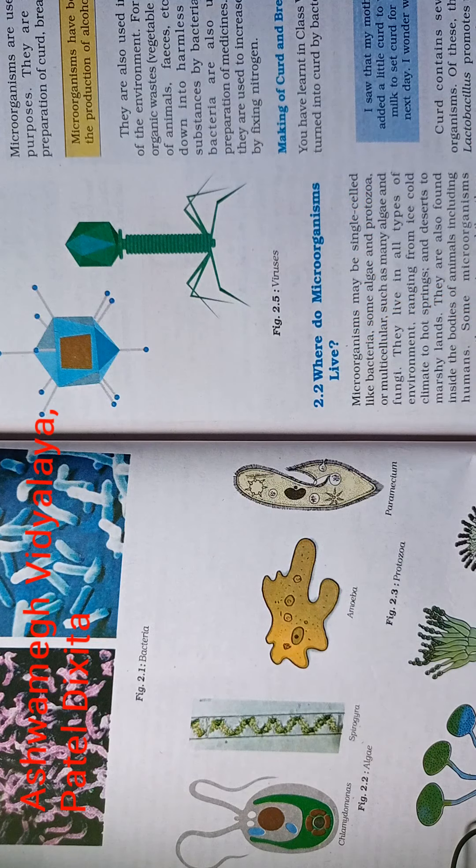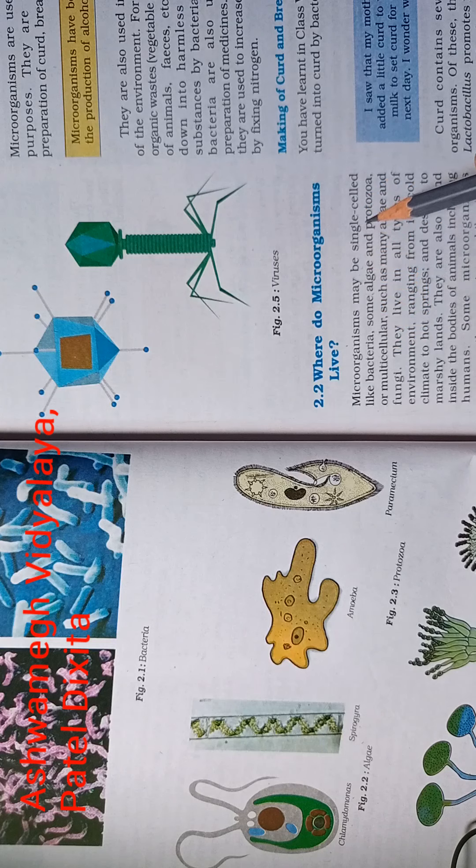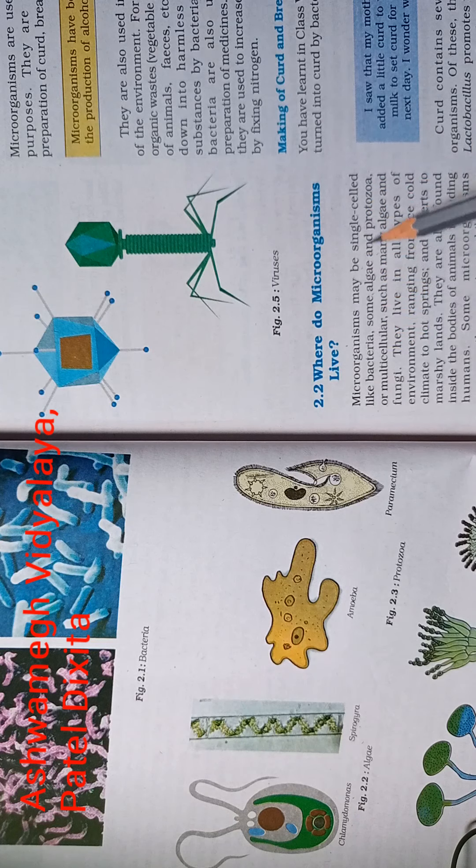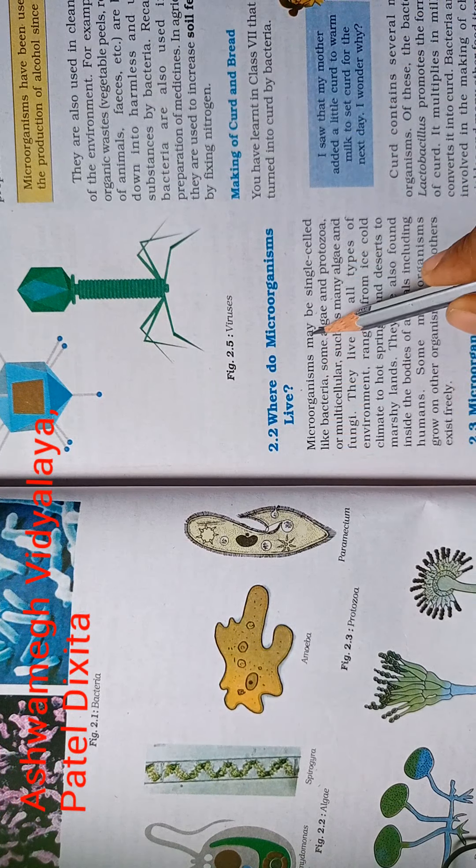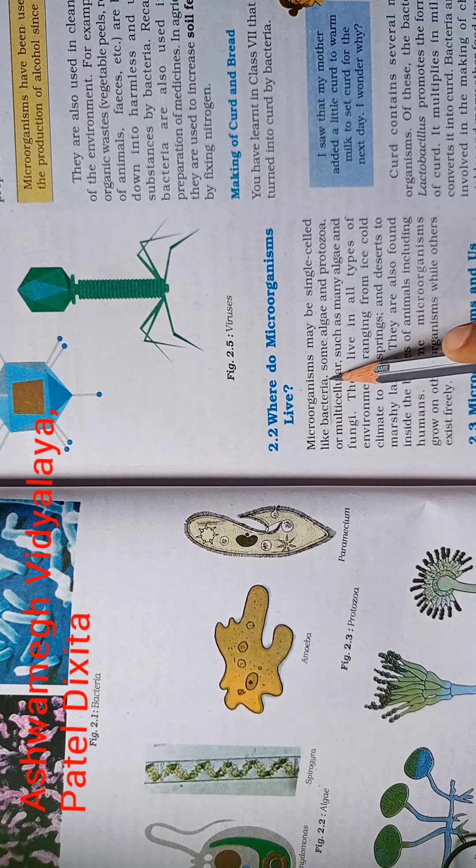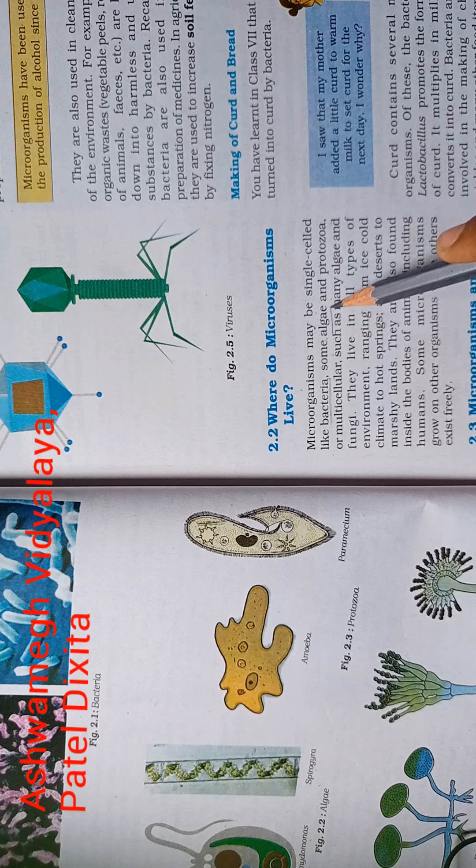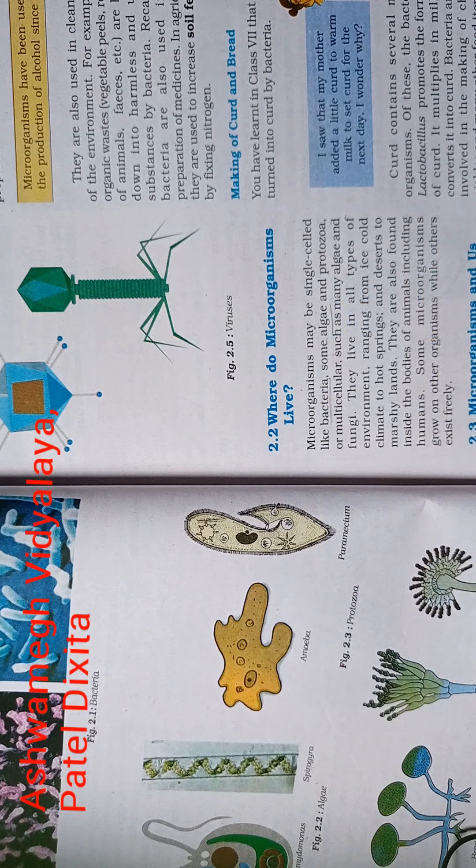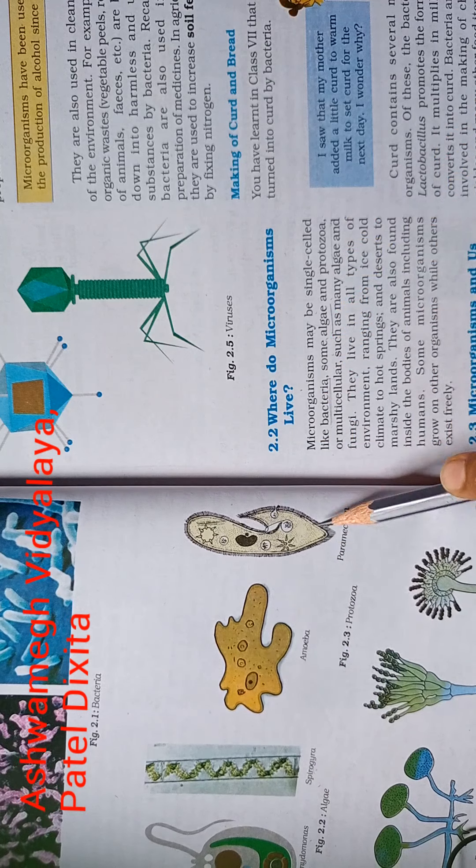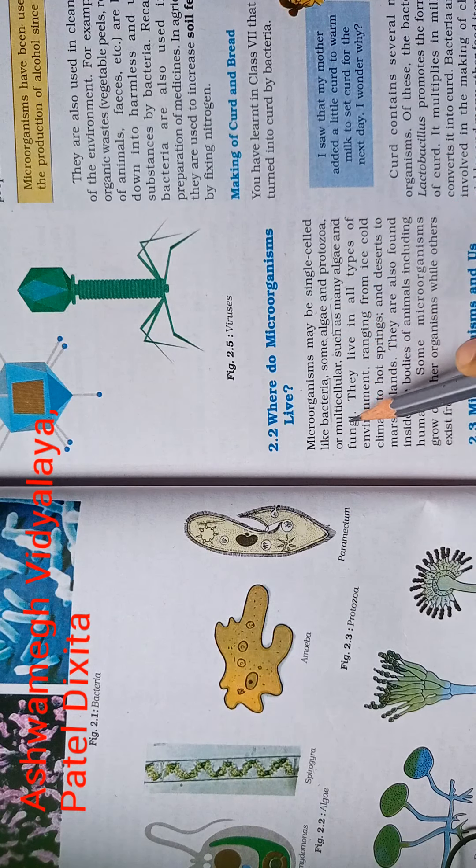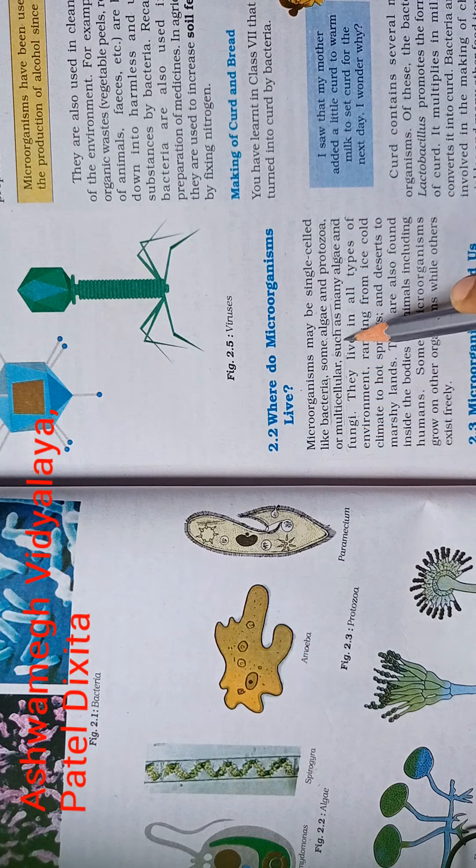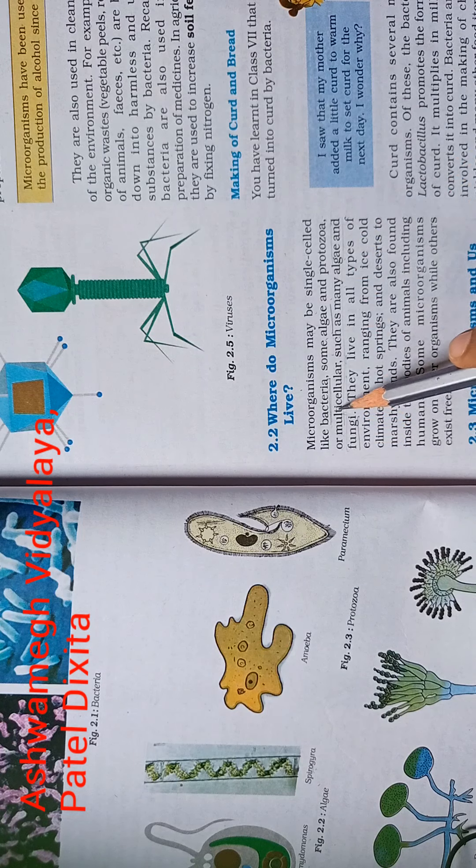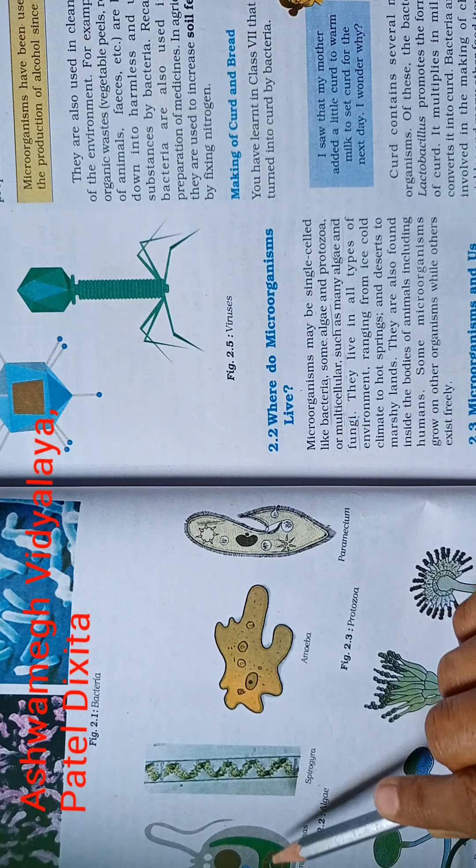Now today we are discussing where do microorganisms live. Microorganisms may be single celled like bacteria, some algae and protozoa, or multicellular such as many algae and fungi.